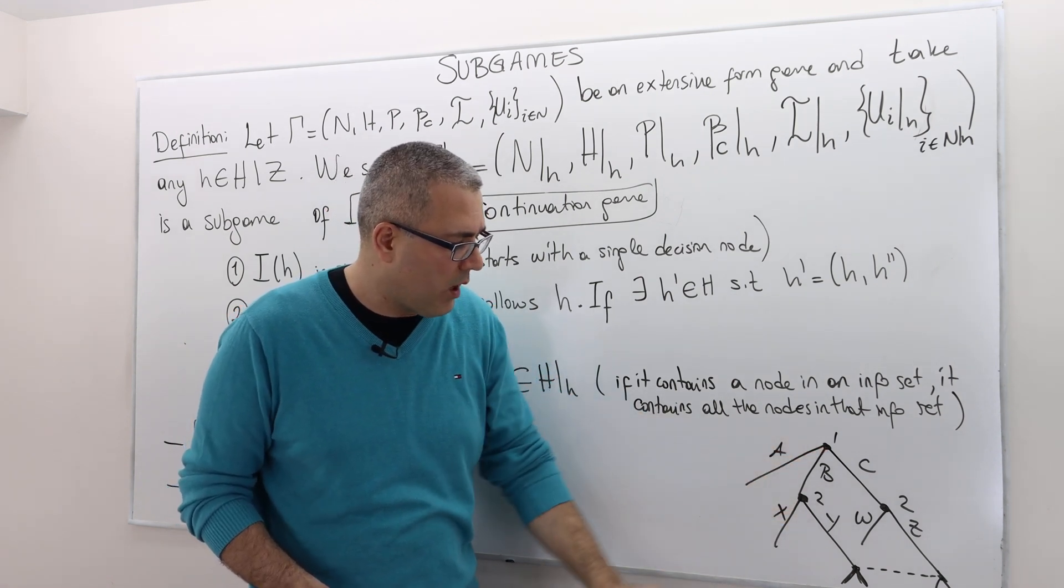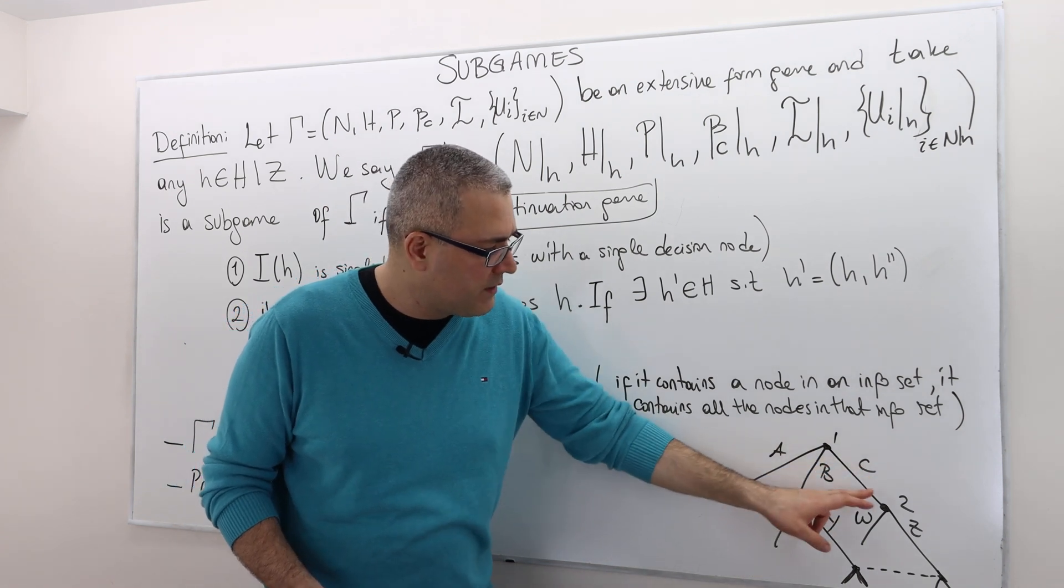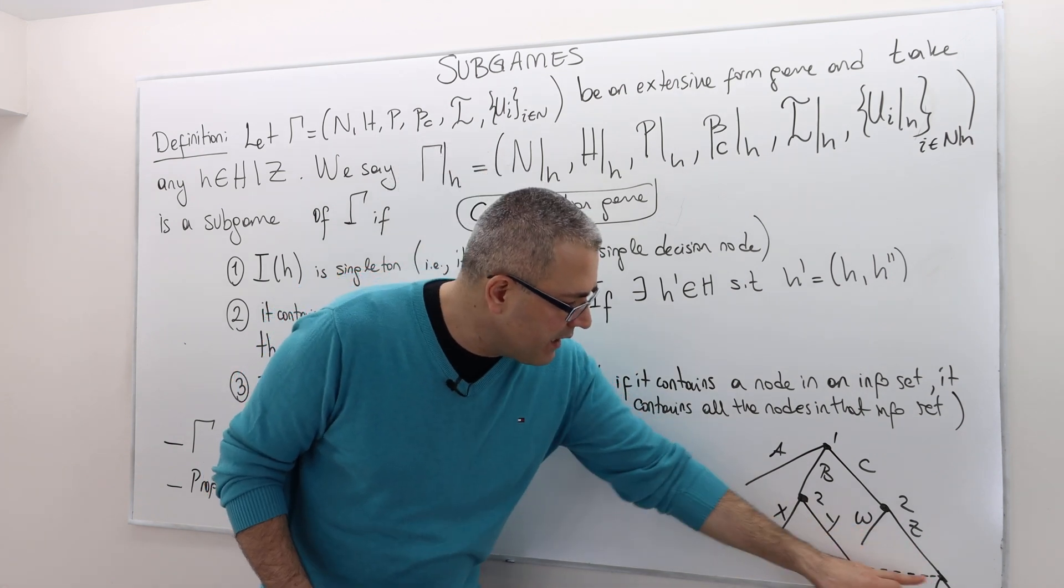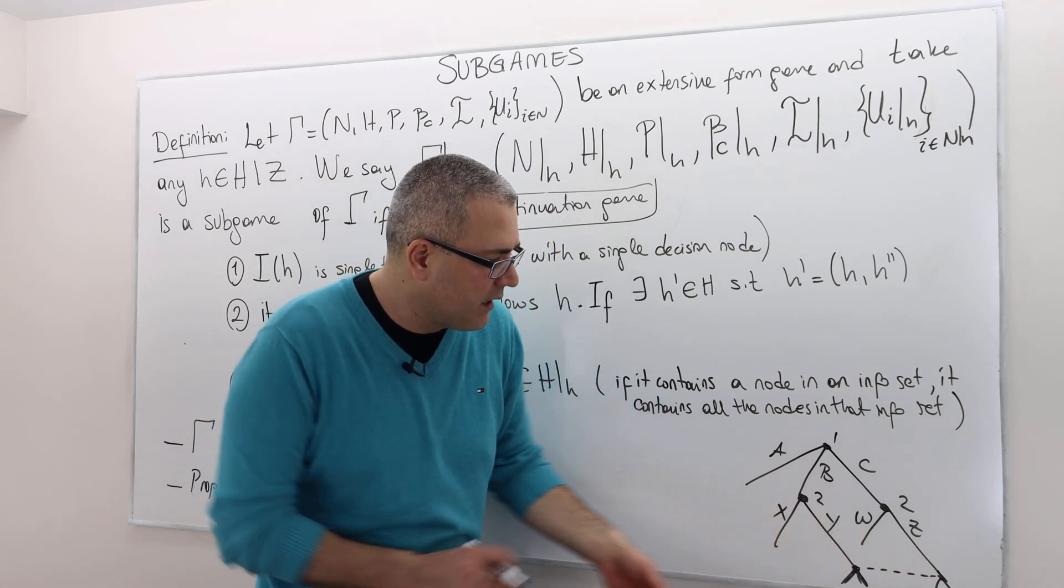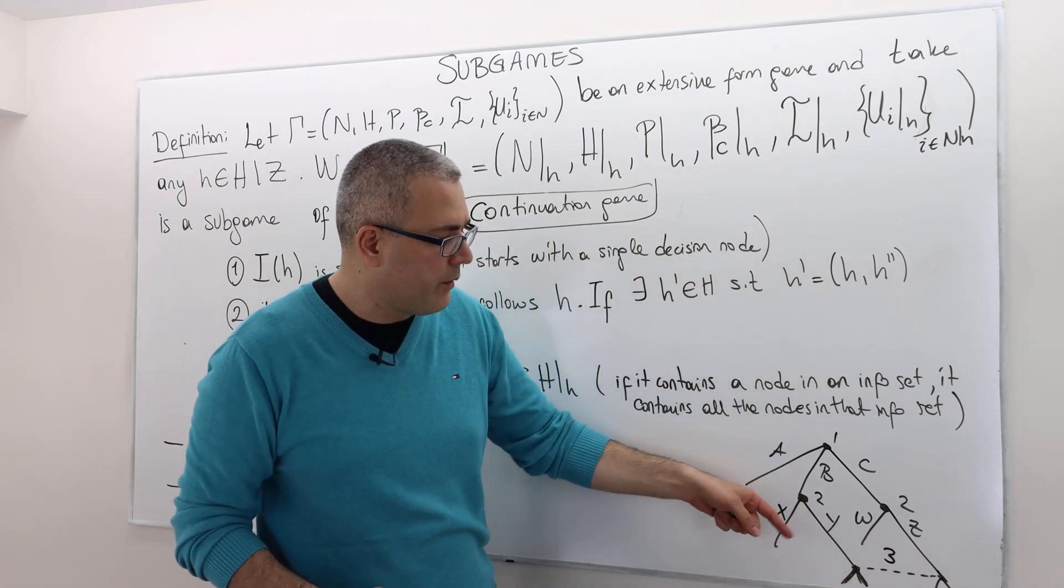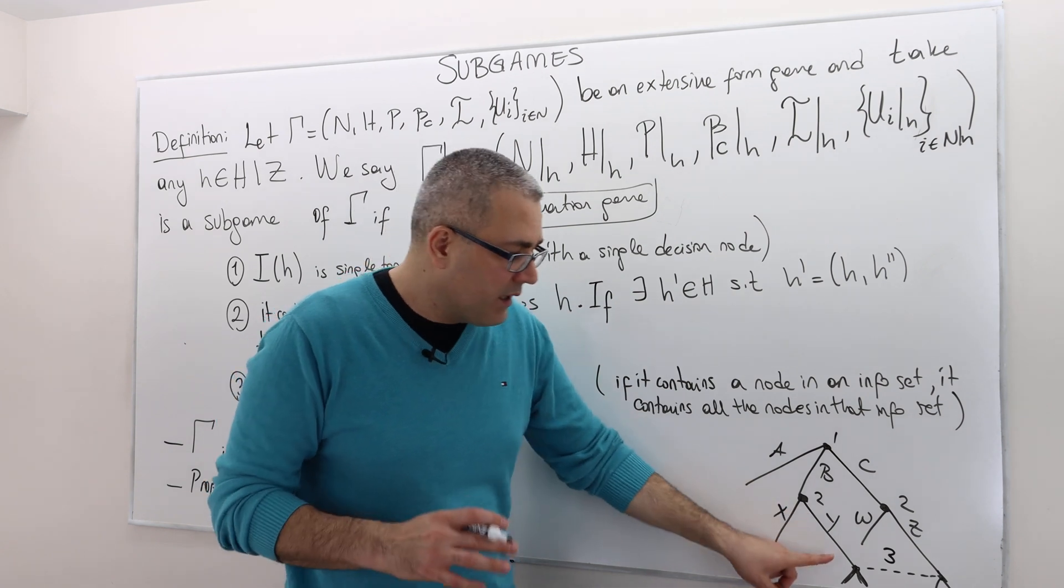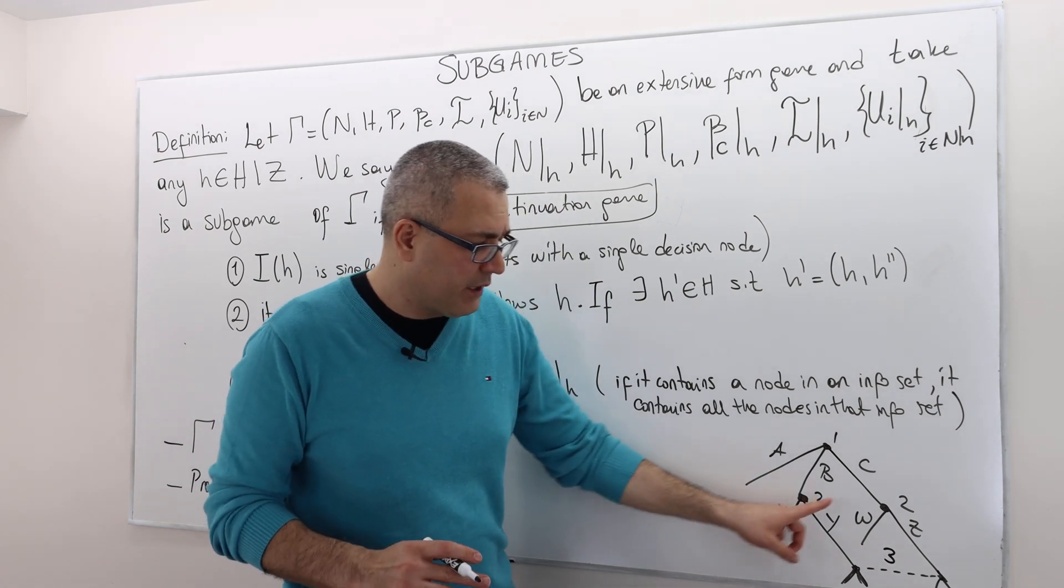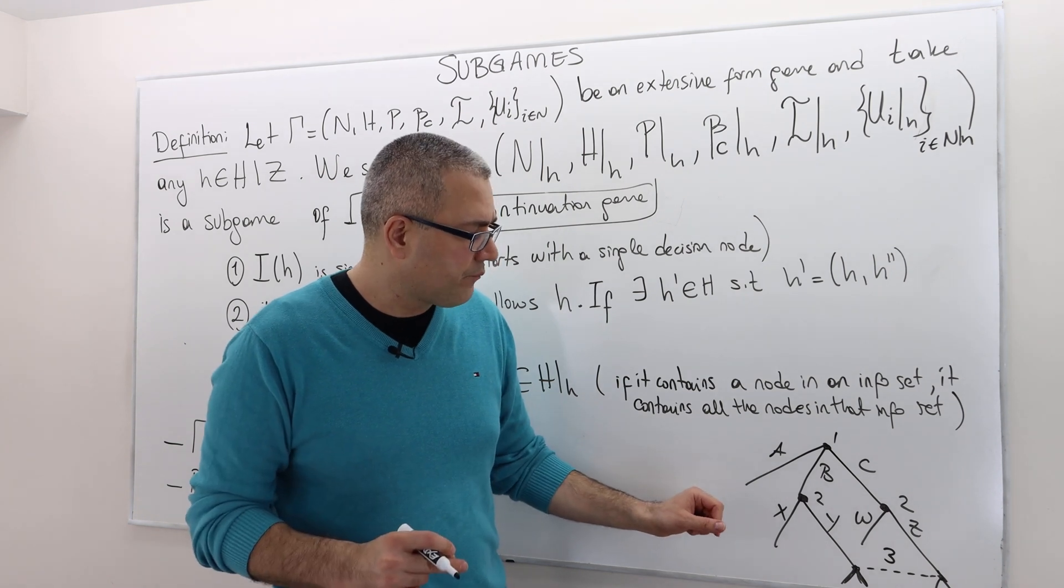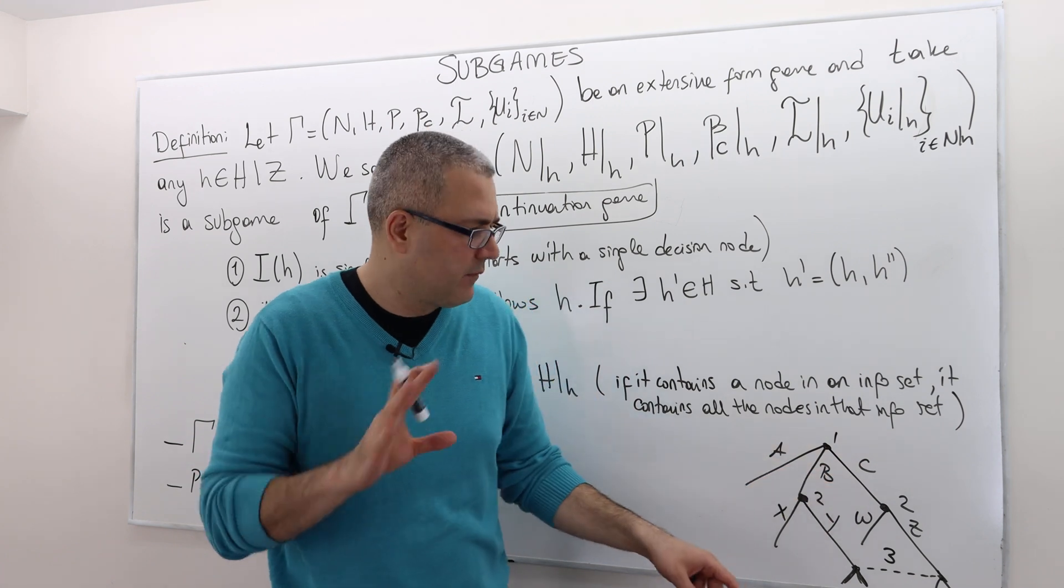After B, player 2 moves X, Y. If it is X, the game is over. And if player 1 moves C, then player 2 moves W, Z. W ends the game, Z continues. Here, there is an information set. Let's say this is player 3, cannot distinguish whether player 2 played Y or E. Player 3 can distinguish player 2's actions. What he can't distinguish is whether player 1 has played B or C.